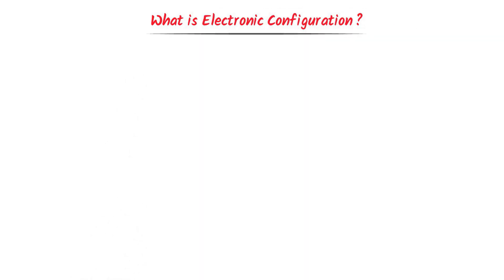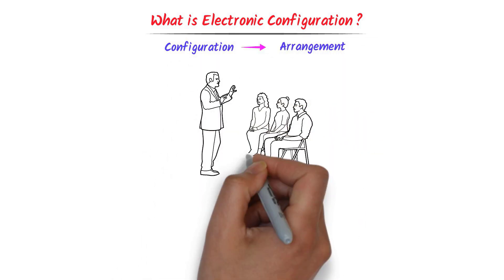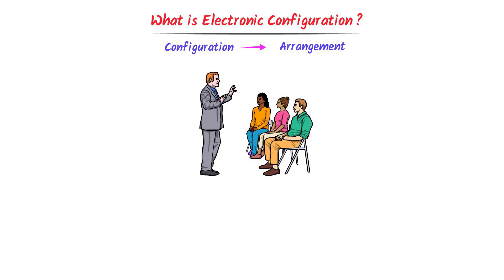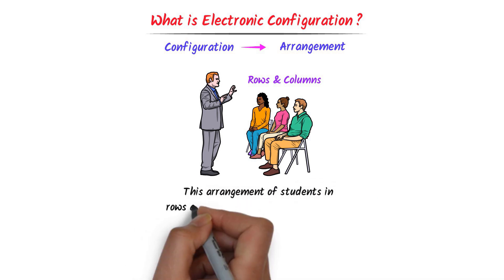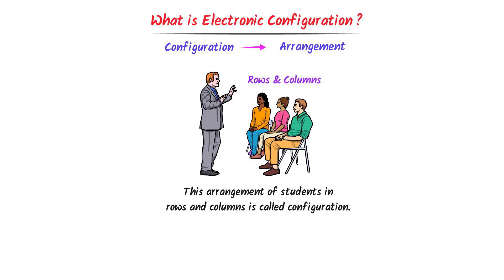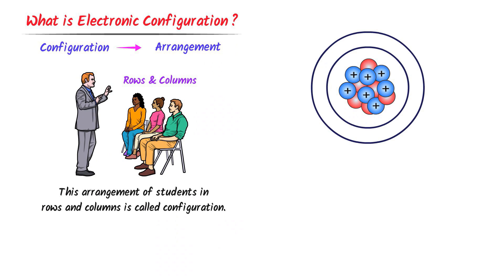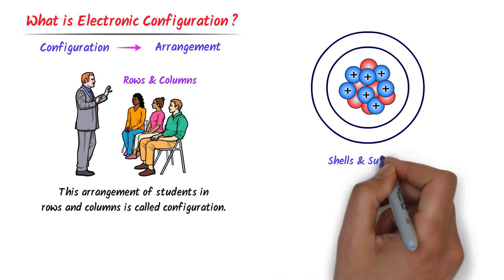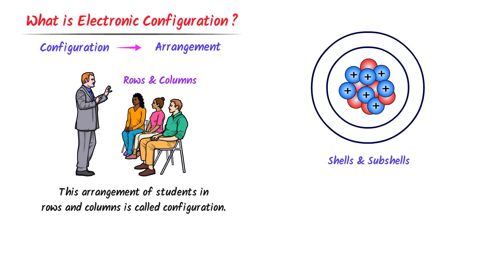Remember that the word configuration means arrangement. Consider these 30 students in a classroom — we arrange them all in rows and columns. This arrangement of students in rows and columns is known as configuration of students in a classroom. Similarly, consider an atom: there are shells and sub-shells present, and electrons revolve in these shells or sub-shells around the nucleus. We arrange electrons in these shells and sub-shells.